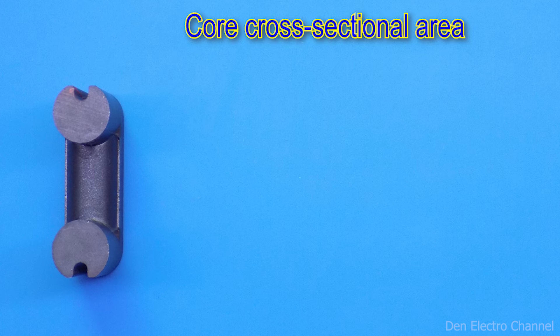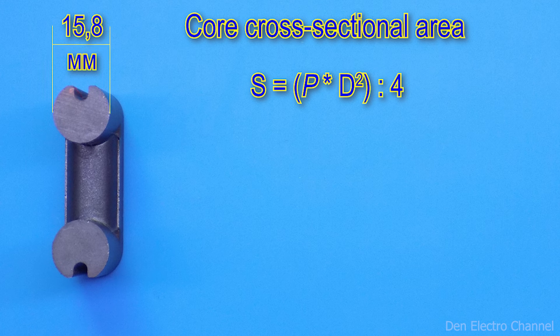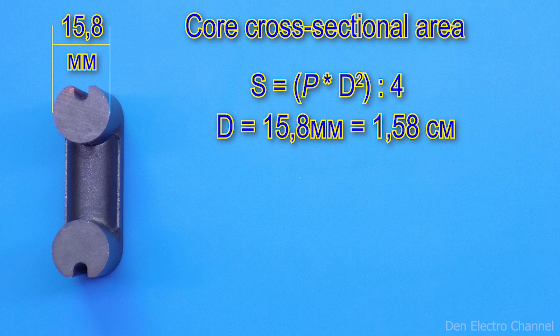The area of a circle is calculated using this formula. We multiply pi by the squared diameter and divide the resulting product by 4. This core has a post diameter of 15.8 millimeters. Converting this figure to centimeters, it turns out 1.58.